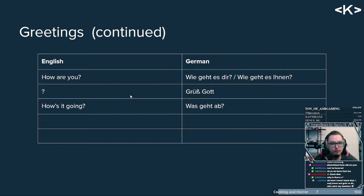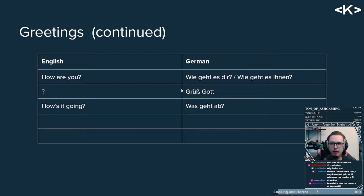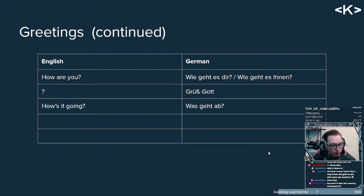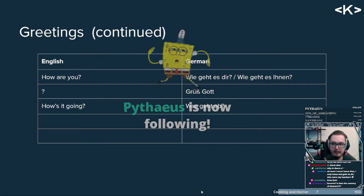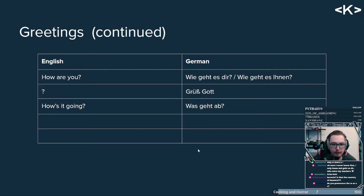I only knew 'wie geht es dir' — usually teachers in school you also speak to honorifically. The honorific system in German is not as crazy as in some other languages. Chinese and Korean have way more complicated honorifics. In German we really only have casual and a slightly formal version for people you don't know — we'd call it 'siezen.' The 'w' in 'wie' is pronounced like a 'v' — so it's 'wie geht es dir.'